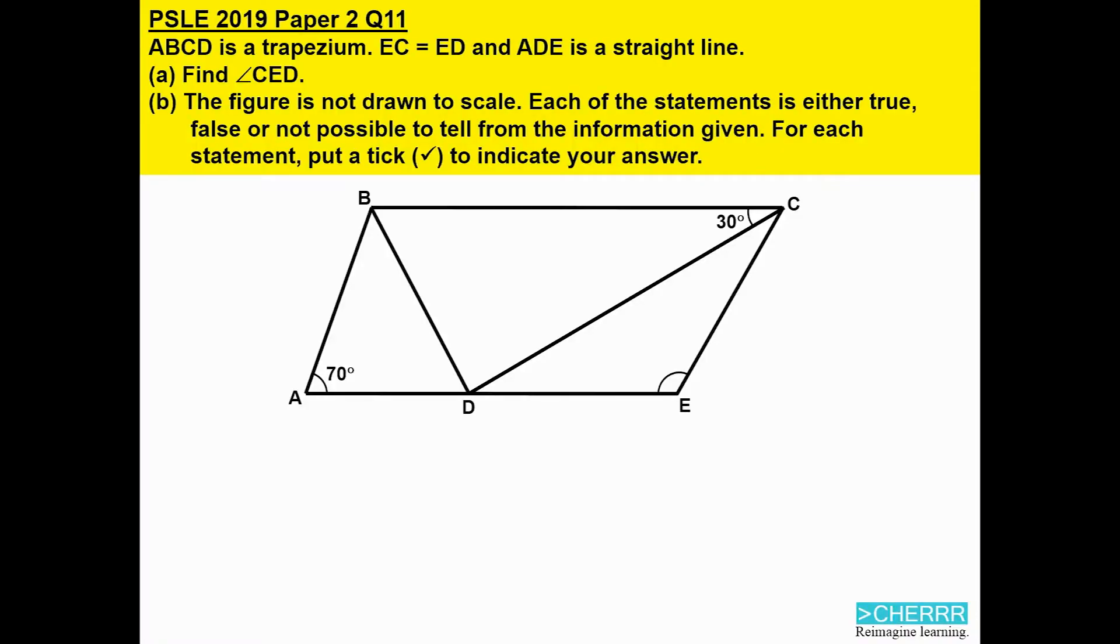PSLE 2019 Paper 2 Question 11. ABCD is a trapezium. EC is equal to ED, and ADE is a straight line. (a) Find angle CED. (b) The figure is not drawn to scale. Each of the statements is either true, false, or not possible to tell from the information given. For each statement, put a tick to indicate your answer.